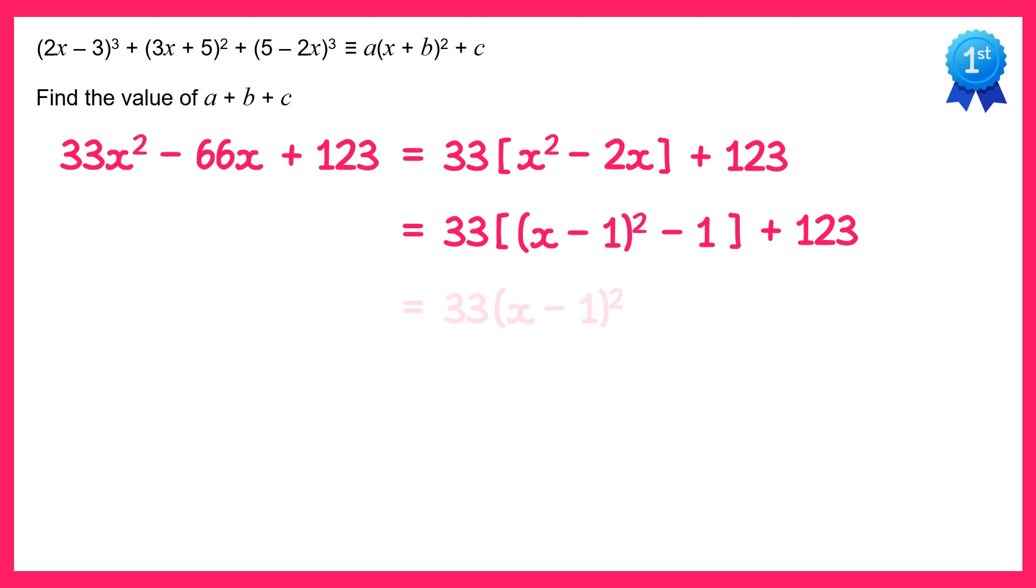So we get 33 lots of the bracket, take away 33, plus 123. If we simplify the last two terms there you end up with plus 90.